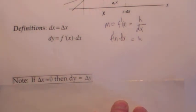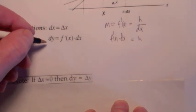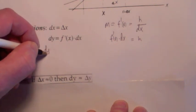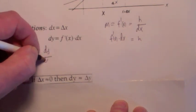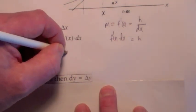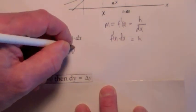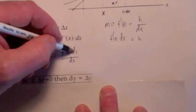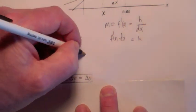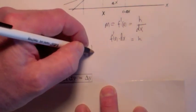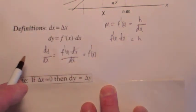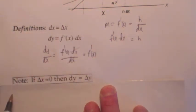Notice the notation here: what do you get if you divide dy by dx? You get f prime of x times dx divided by dx. The dx cancels, so you get f prime of x. The notation is consistent with what we've been talking about.